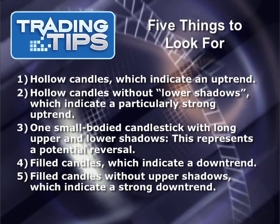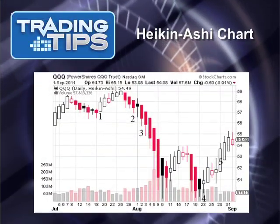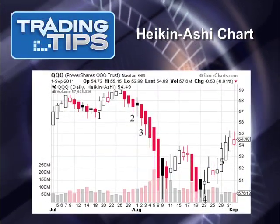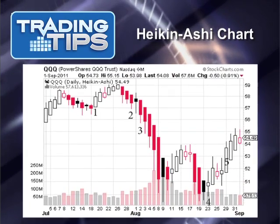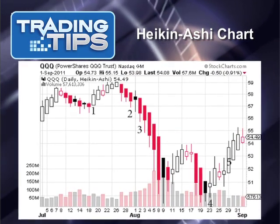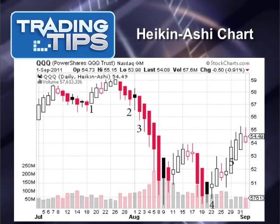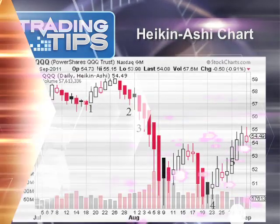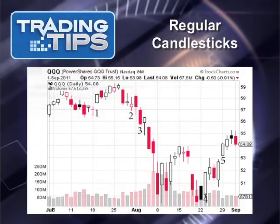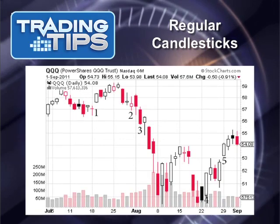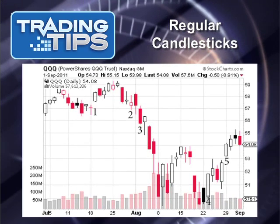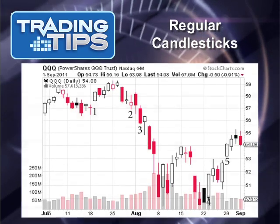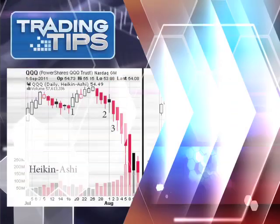Take a look at this Heikin-Ashi candlestick chart. Study it for a moment and take note of points one through five. We'll look at the same chart using regular candlesticks in a minute. Here it is — study this chart and look at the points. Do you remember any differences? Here's the first half of both charts side by side, with the Heikin-Ashi chart on the left.